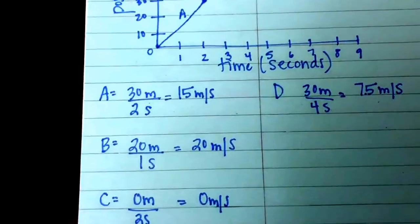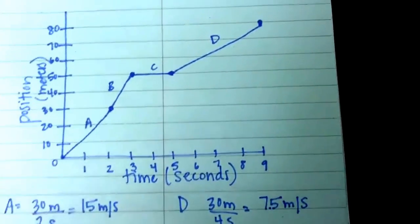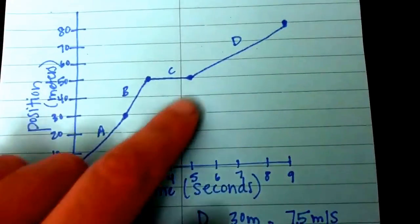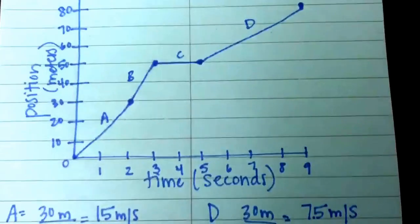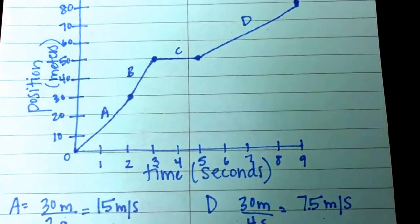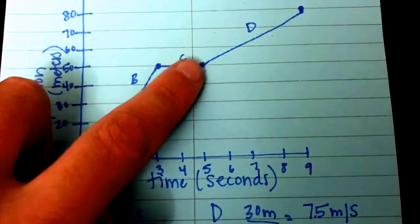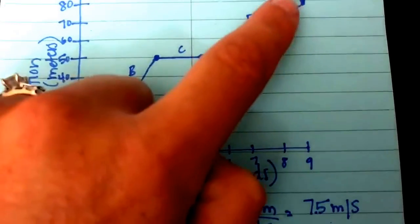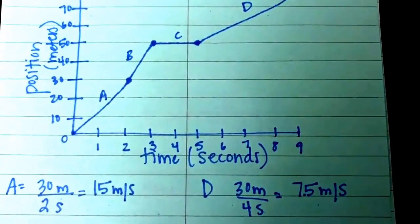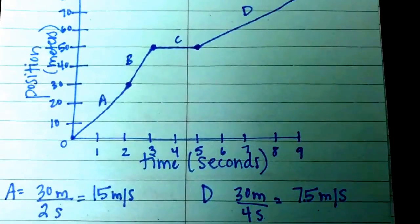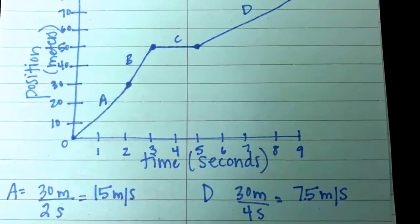And then lastly, letter D. Started at 50, ended at 80, which gives us 30 meters. Our time starts at 5, ends at 9, which gives us 4 seconds. And 30 divided by 4 is 7.5 meters per second.